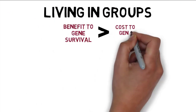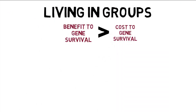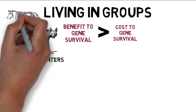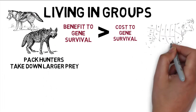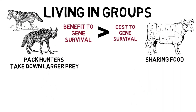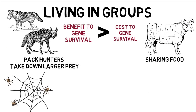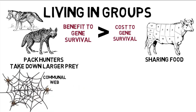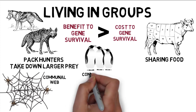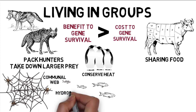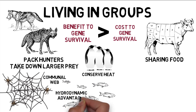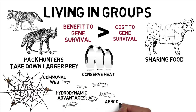For animals that live in groups, the benefit to their genes must exceed the cost. Pack hunters such as wild dogs, hyenas, or wolves can score larger prey compared to lone hunters despite the cost of sharing food. Other animals such as social spiders build massive communal webs, and penguins huddle together to conserve heat, while fish swimming behind other fish gain hydrodynamic advantages, like the aerodynamic advantages of birds flying in V formation.